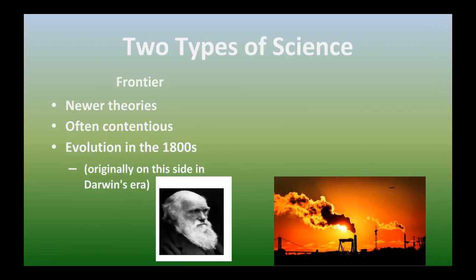It is now on the consensus side. And when we say consensus, that means, again, that 97% of scientists agree that global warming is human-induced. That's a consensus. It shouldn't be on the, it's not on the frontier anymore.